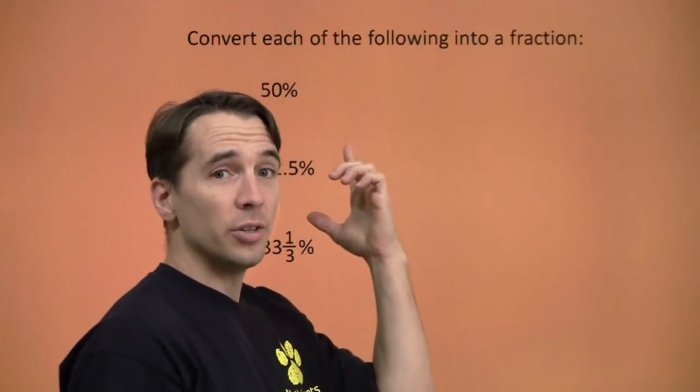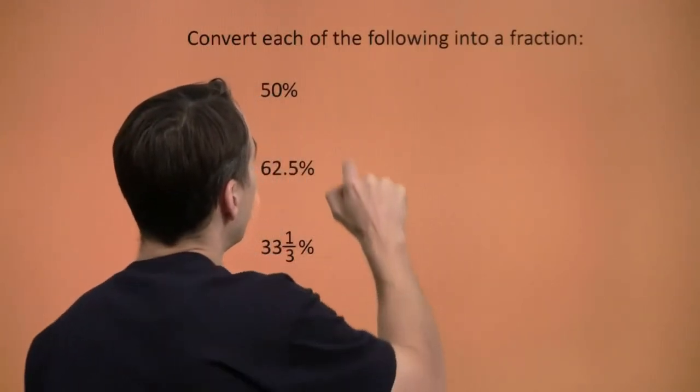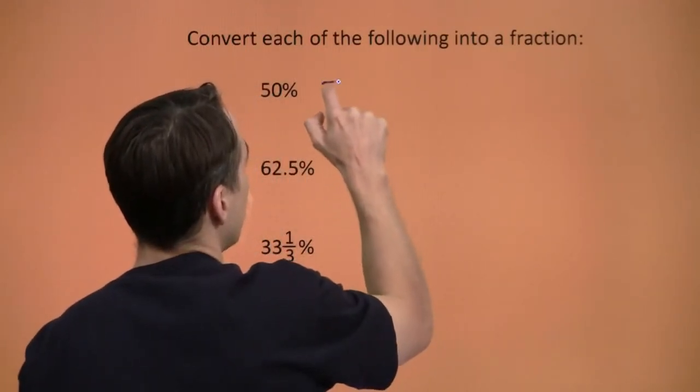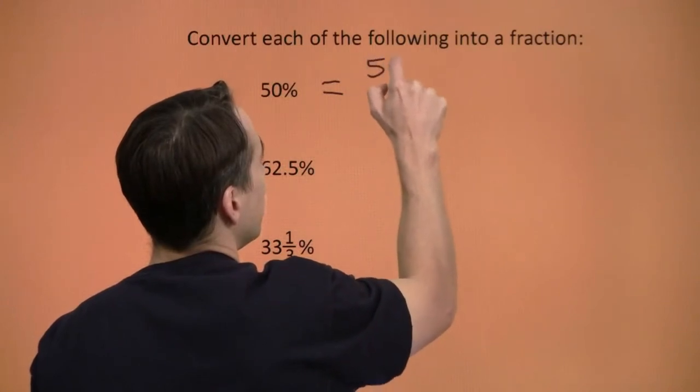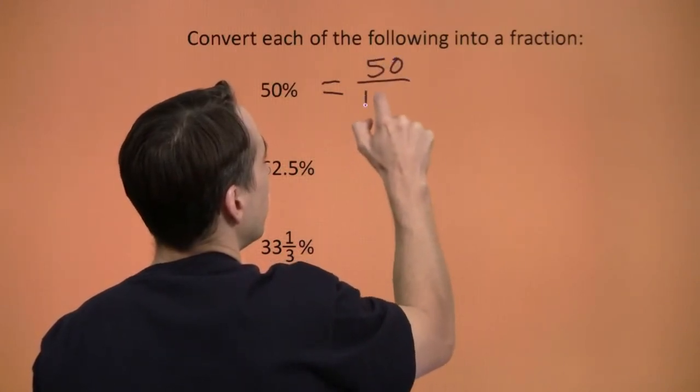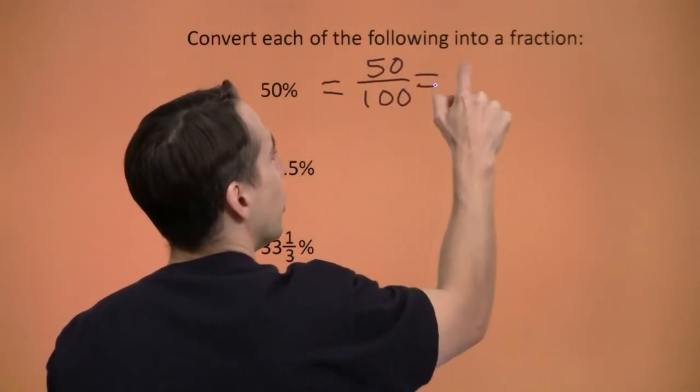So let's try turning some percents into fractions. 50 percent — that's 50 per 100. You got it: that's one half.